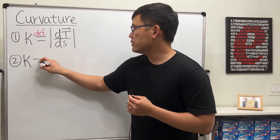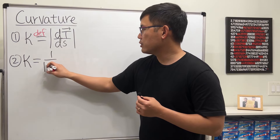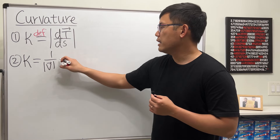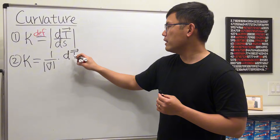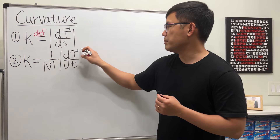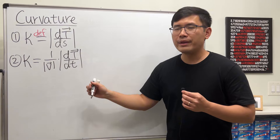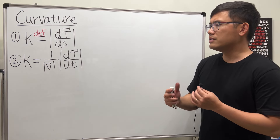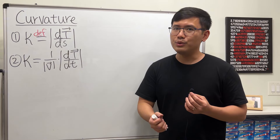Kappa is also equal to one over the magnitude of the velocity — which is just the speed — times the derivative of the unit tangent vector with respect to t, and then we take the magnitude of that. That is much better, but of course there are certain situations where specific formulas are more convenient.